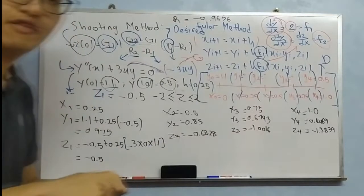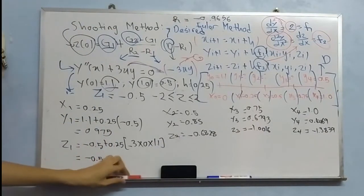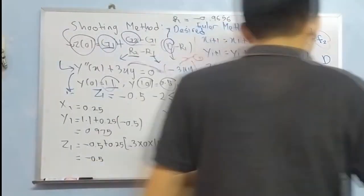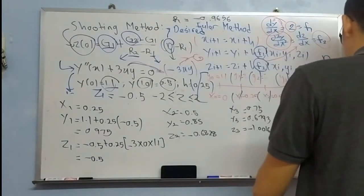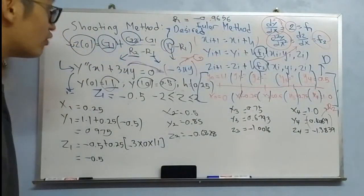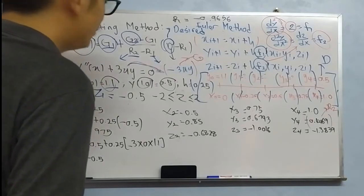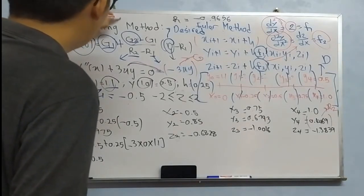So now, again, for second guess, we need to highlight the last value, that is Y4, we need to highlight, because this will be our R2, the final answer from the second guess. So we write it down, R2 equals 0.4469.